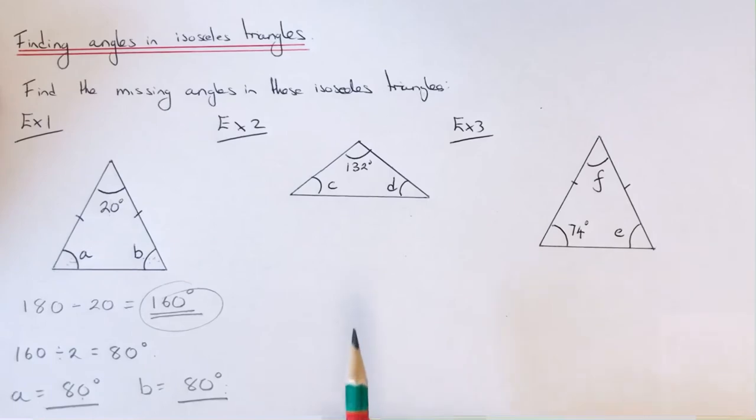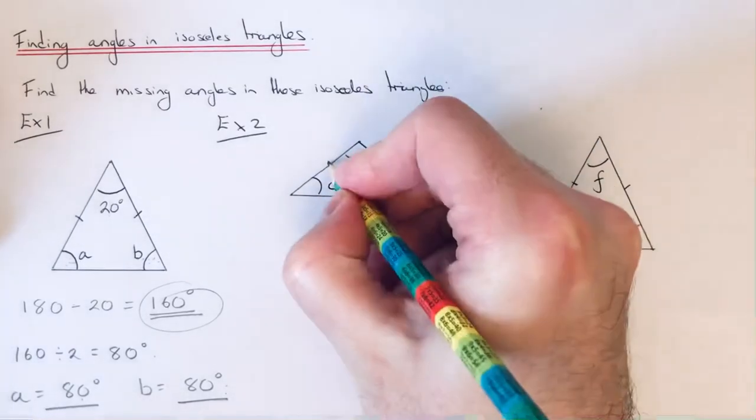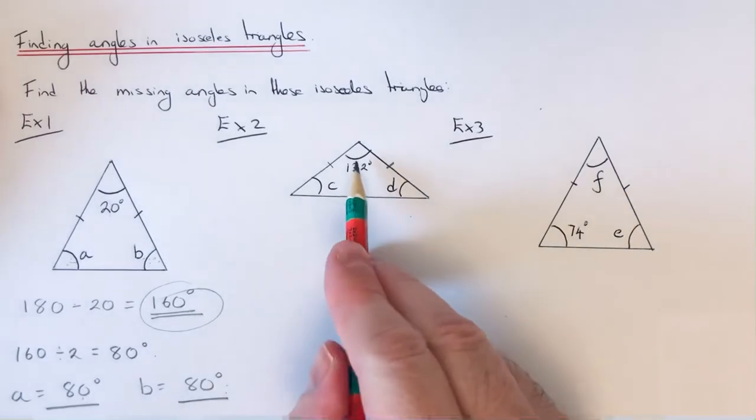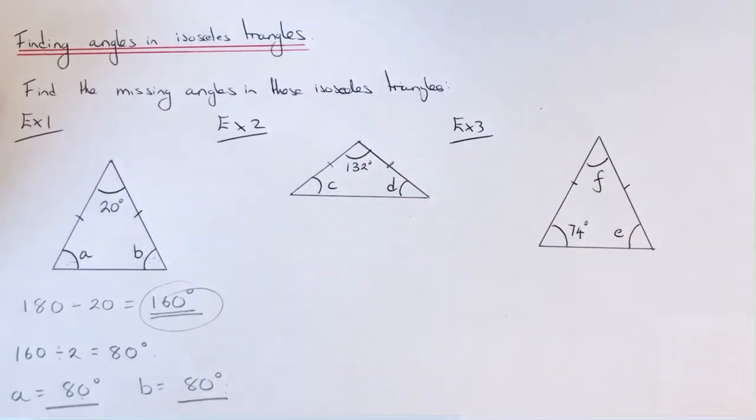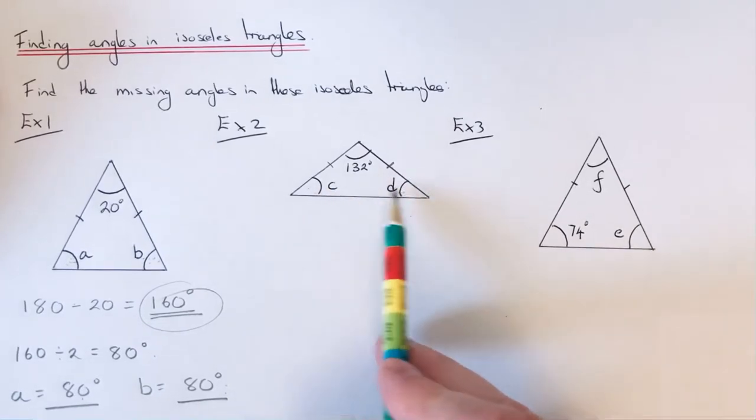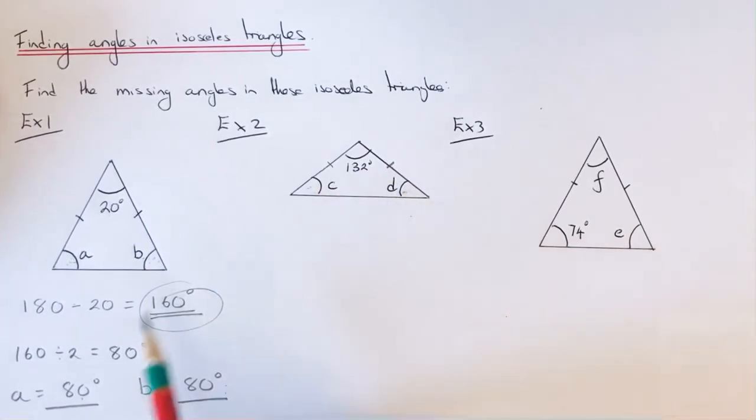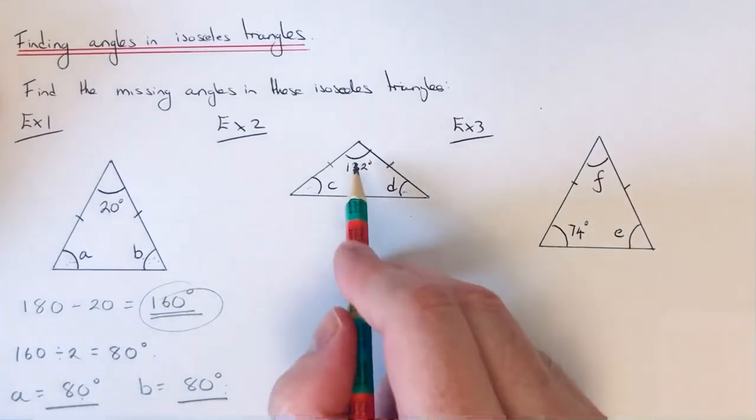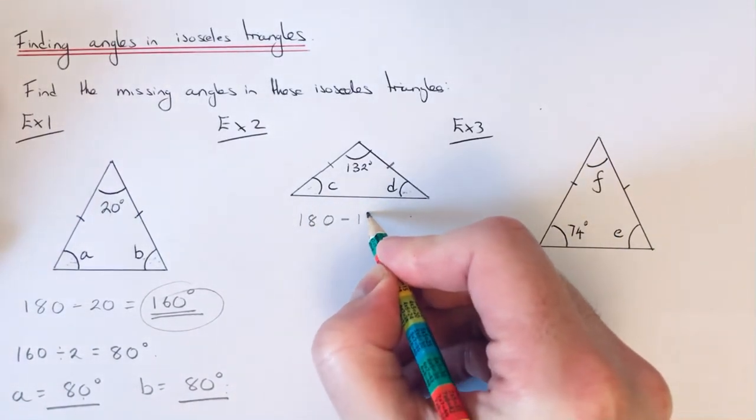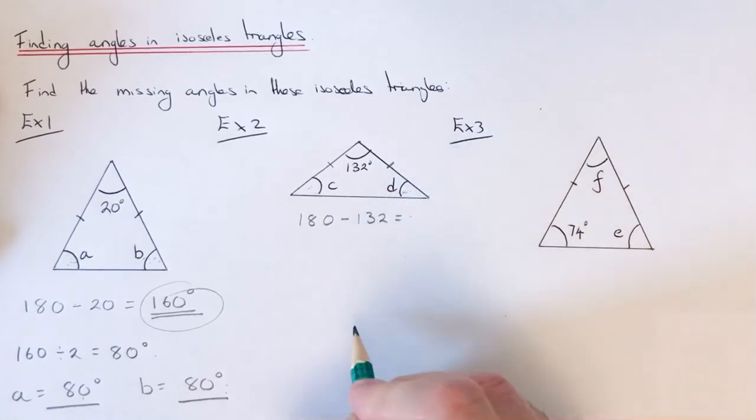Let's have a look at the second example. Again we have another isosceles triangle and we've got the angle at the top, this time it's 132. We've got to find these two bottom angles. These two bottom angles here are both the same, so the first thing you need to do is take 132 off 180.